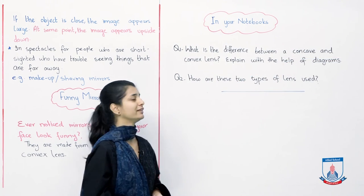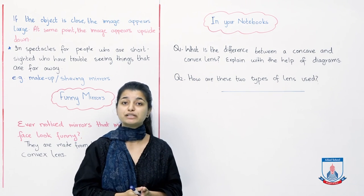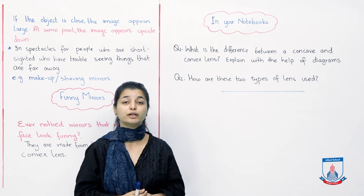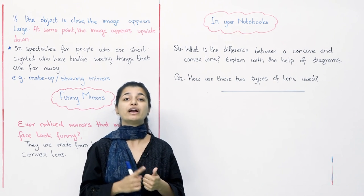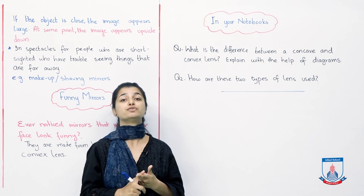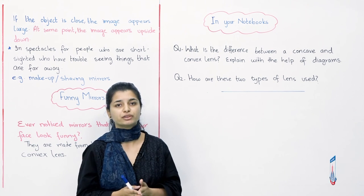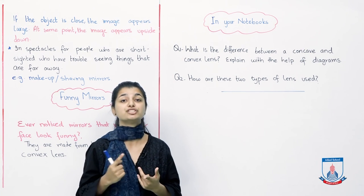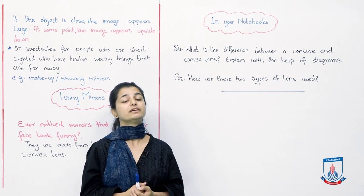Question number two: How are these two types of lens used? Again, you just have to mention they are used in which way, and we've discussed a lot of examples. So the convex lens is used in rear-view mirrors or shops where people want to see distant things more clearly. On the other hand, the concave lens we use in makeup or shaving kits to see nearer objects more clearly. I hope the difference is clear.